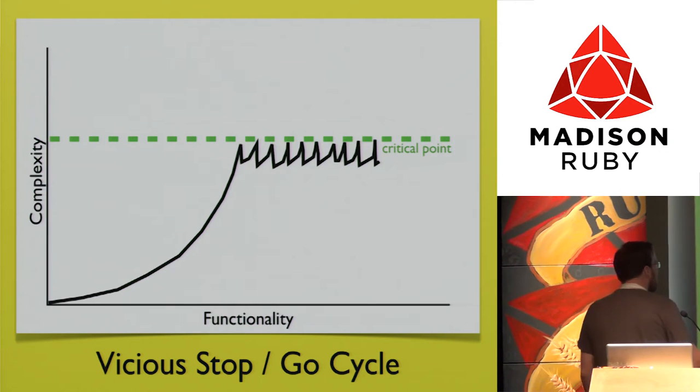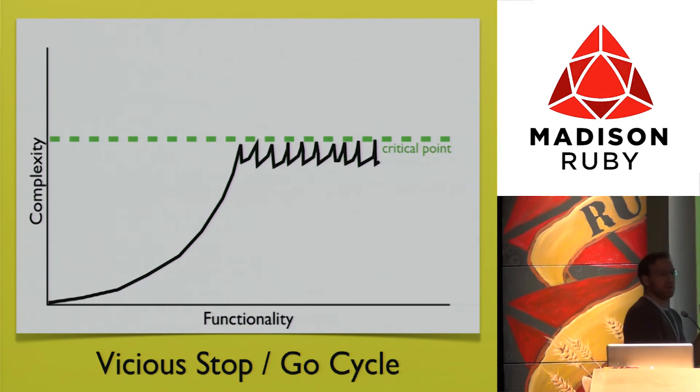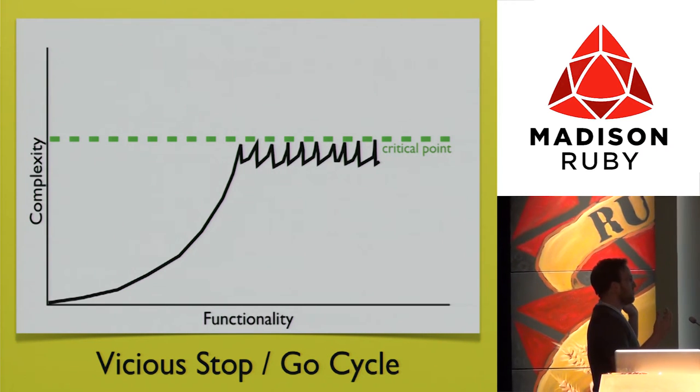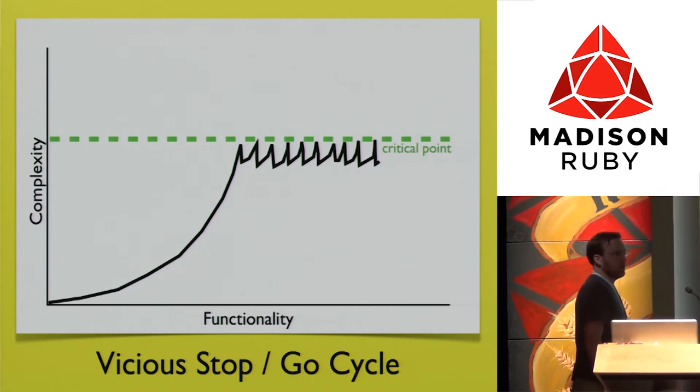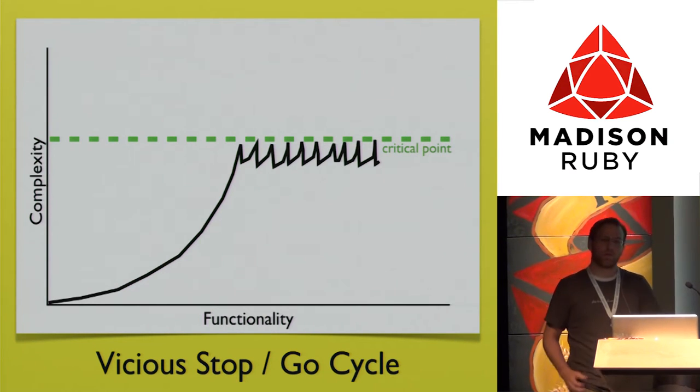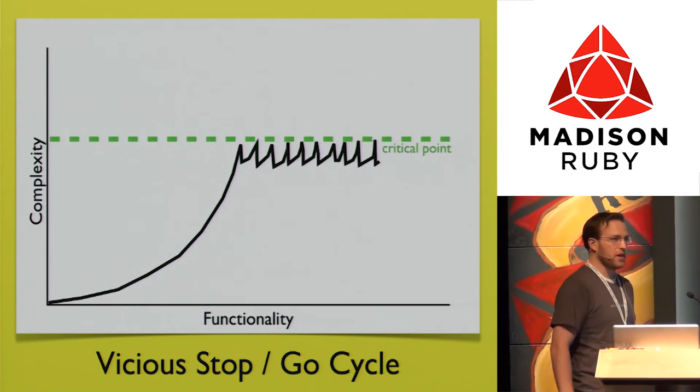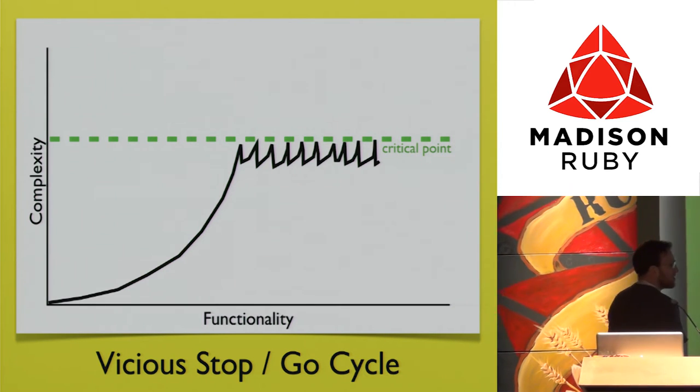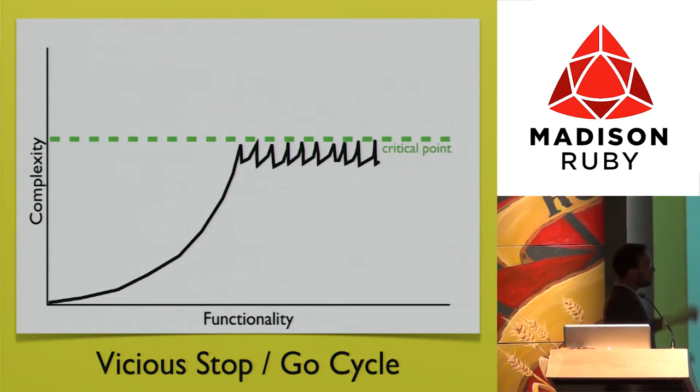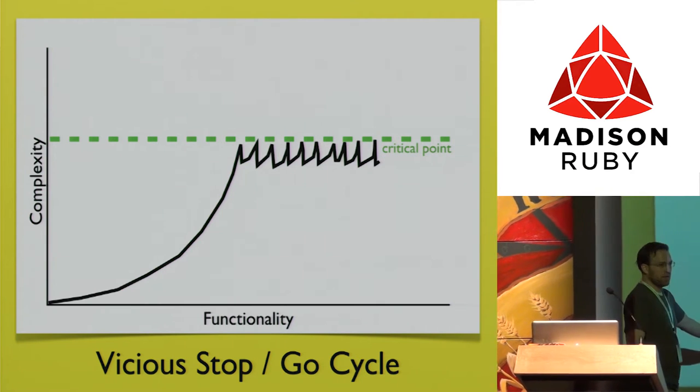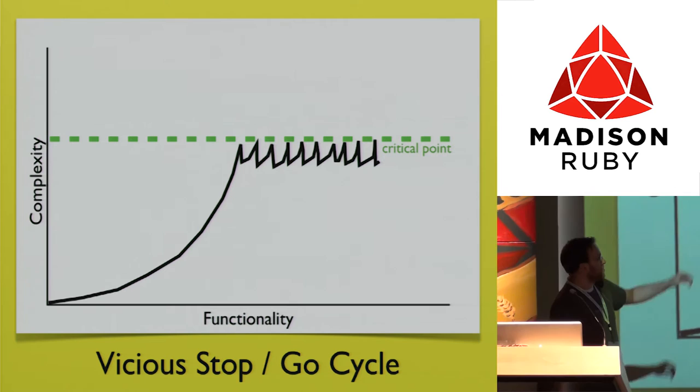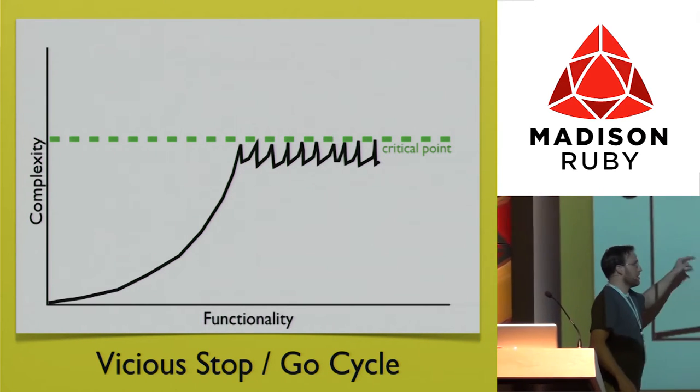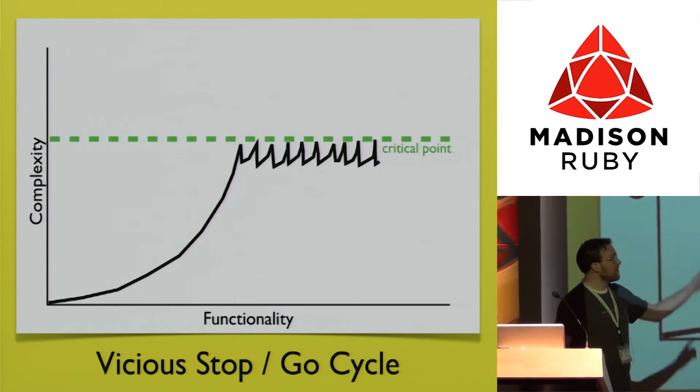Moving back to the chart, this is what I see happens on a lot of projects we get pulled in on. There's this vicious stop and go cycle where your team is just going really fast out of the gate—go, go, go to get everything in there. You're racing as fast as you can up to the critical point. You don't notice it at first because you're making a lot of progress, but as soon as you get up there your system becomes more difficult to work with as complexity goes up.